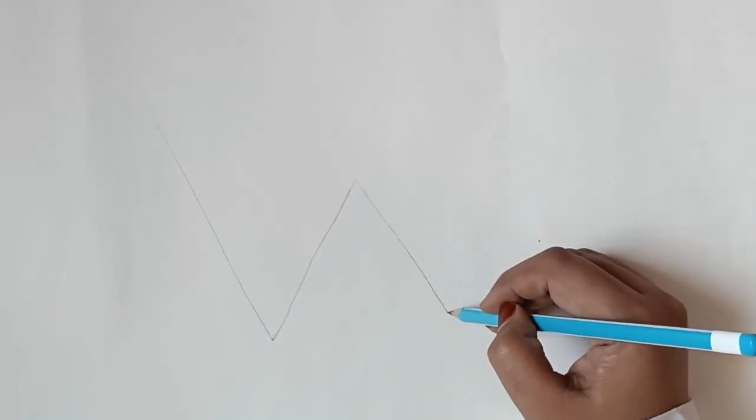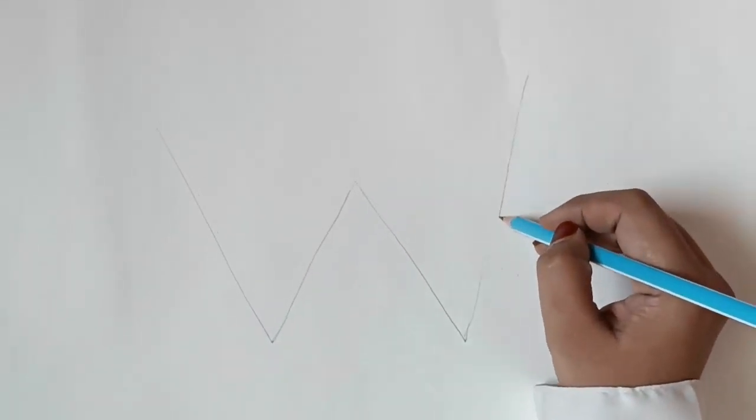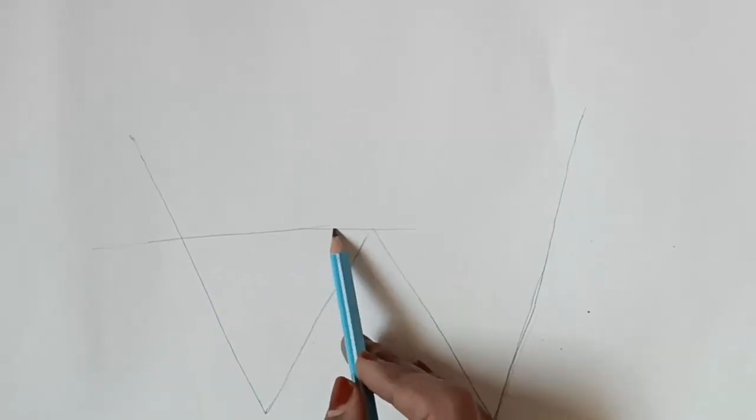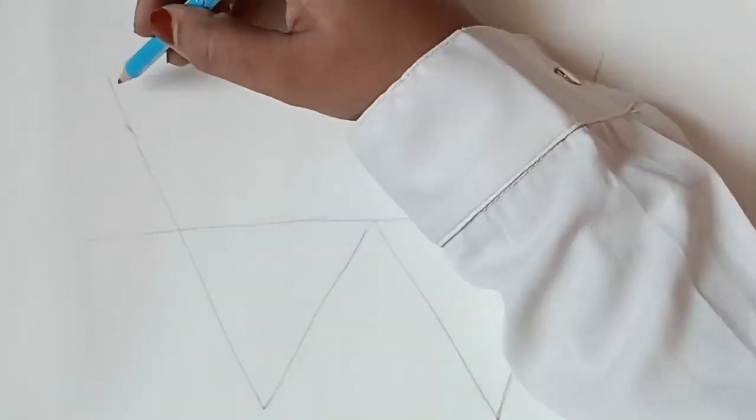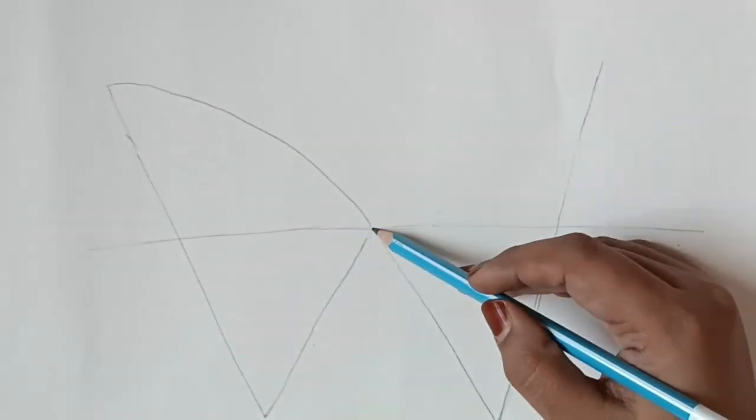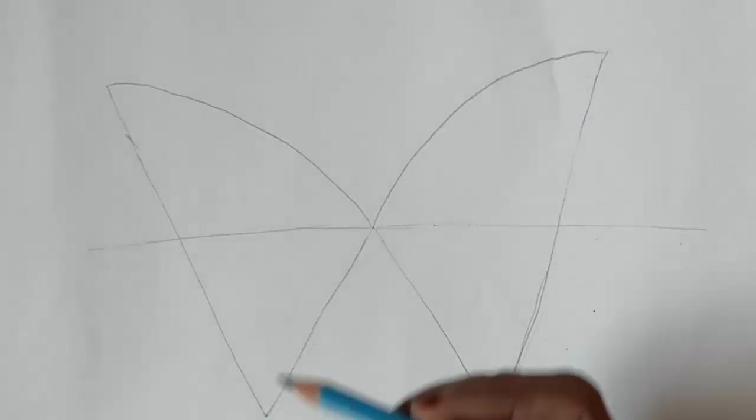Start by making a W. Now draw a straight line across it. Now, from the top of that line, draw a curved line that connects to a straight line.